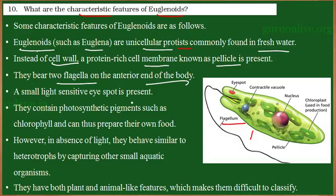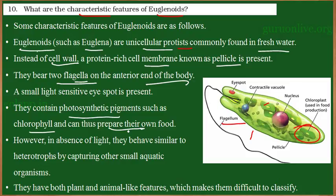These organisms have both plant as well as animal characteristics. With the help of the flagella, they can move from one place to another, which is a characteristic of an animal. But like plants, they have photosynthetic pigments and can prepare their own food. We can see the chloroplast, which is greenish in color and contains photosynthetic pigment chlorophyll. For photosynthesis, light is required, so they have an eye spot which is sensitive to light, enabling them to move toward the direction of light.